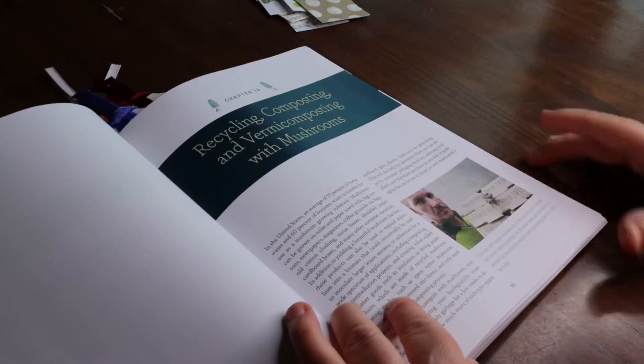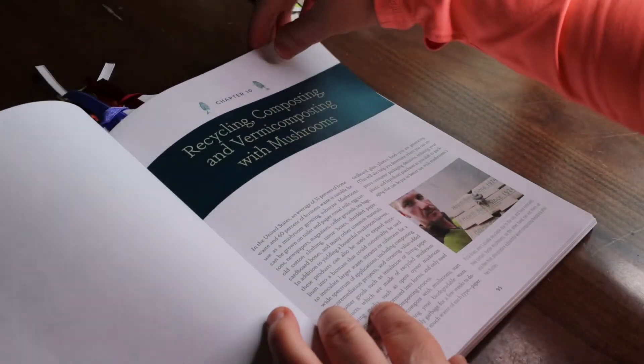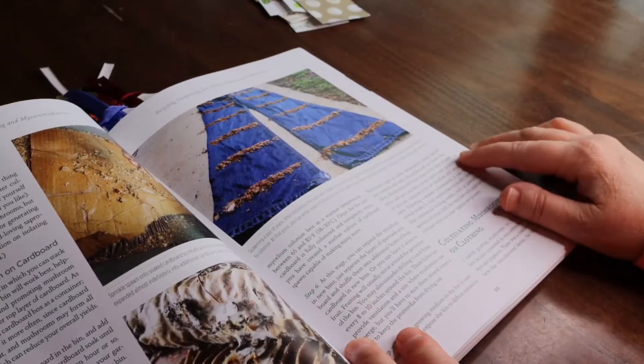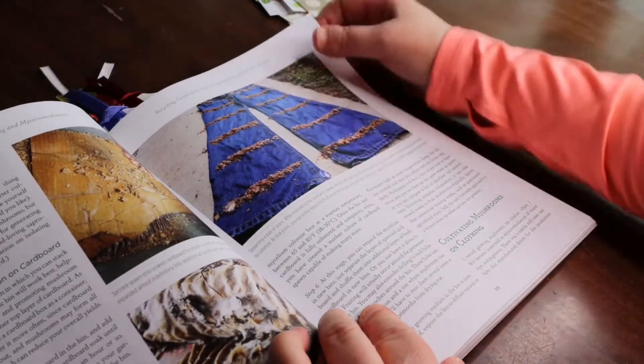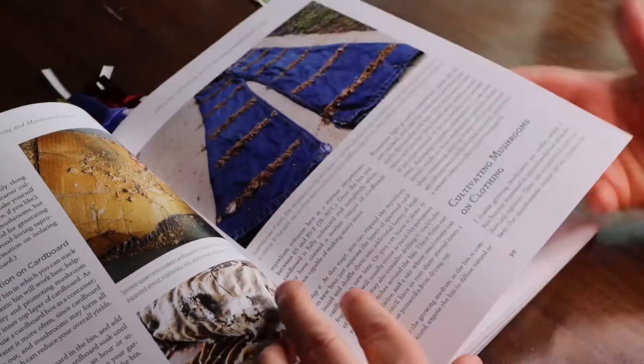Trad gives some great ideas about growing mushrooms on cardboard and any biodegradable material such as a pair of jeans. Look at that. And he also talks a lot about vermicomposting, and I'm really into that. So this is a good chapter.